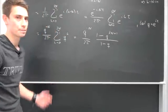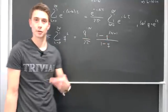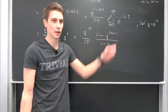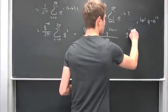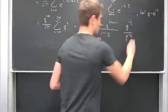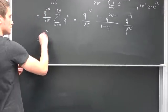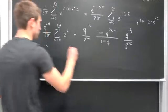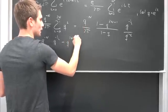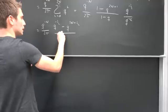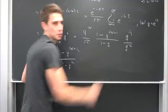Now we need to manipulate this into something involving the sine function. I would like to multiply this fraction by Q to the negative 1/2 over Q to the negative 1/2. Distributing everything, we get Q to the negative N over 2π, times: Q to the negative 1/2 minus Q to the 2N plus 1/2, over Q to the negative 1/2 minus Q to the positive 1/2.